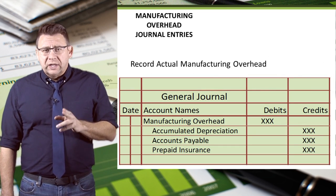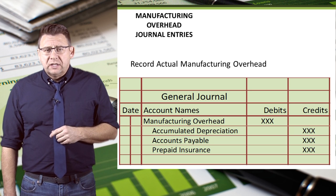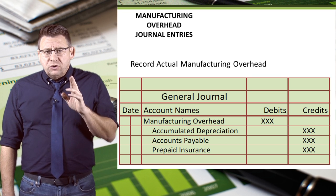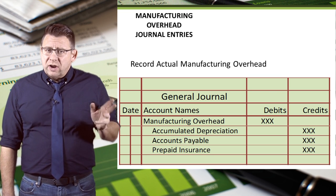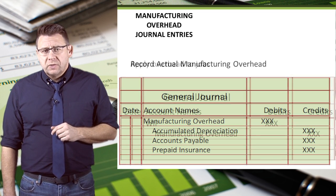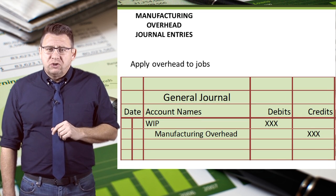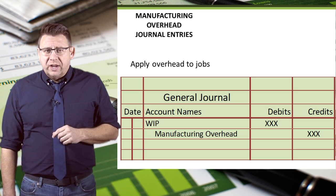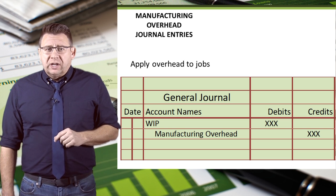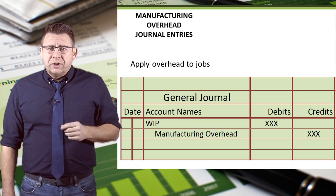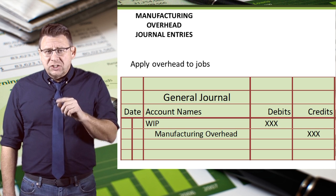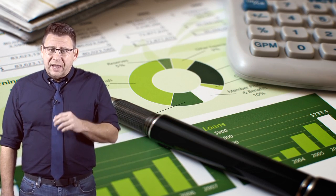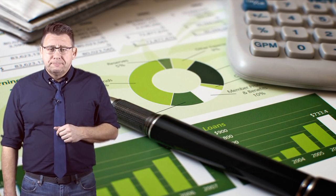Finally, let's look at the journal entries related to manufacturing overhead. The journal entry to record actual manufacturing overhead is a debit to manufacturing overhead and a credit to the various balance sheet accounts. The journal entry to apply overhead to jobs is a debit to WIP and a credit to manufacturing overhead. Remember, the amount of this journal entry is determined by using the predetermined overhead rate, not actual manufacturing overhead costs. That concludes this short video on how to allocate overhead to jobs.